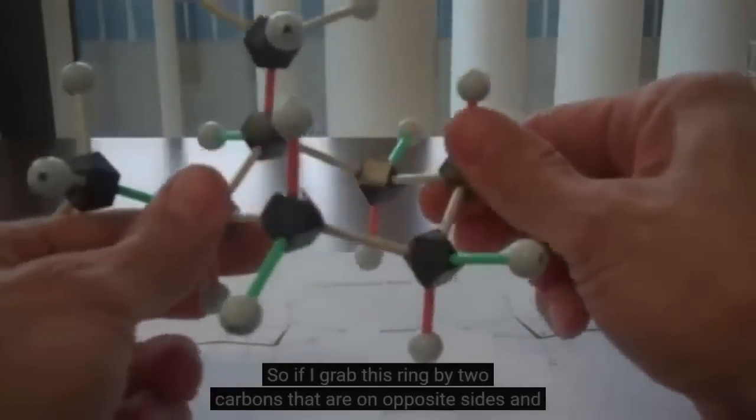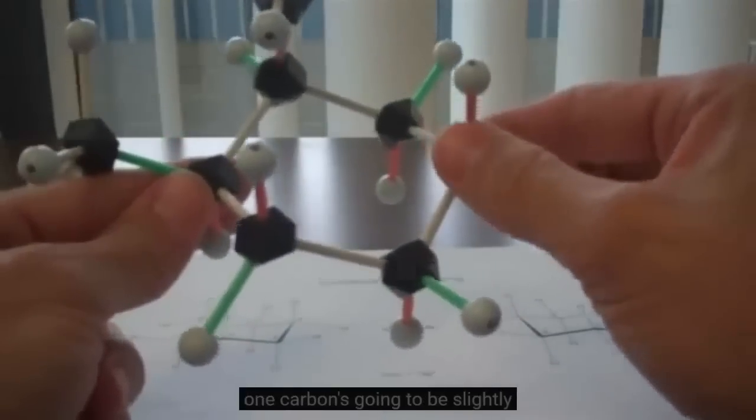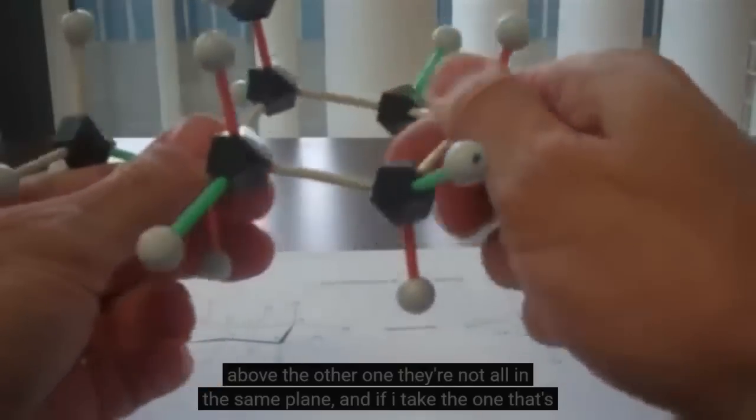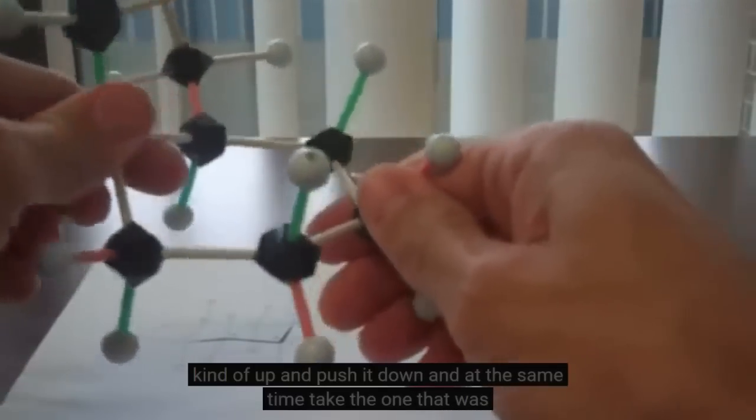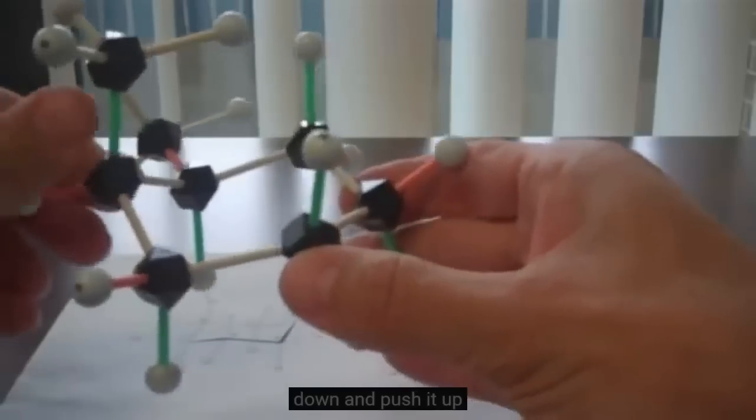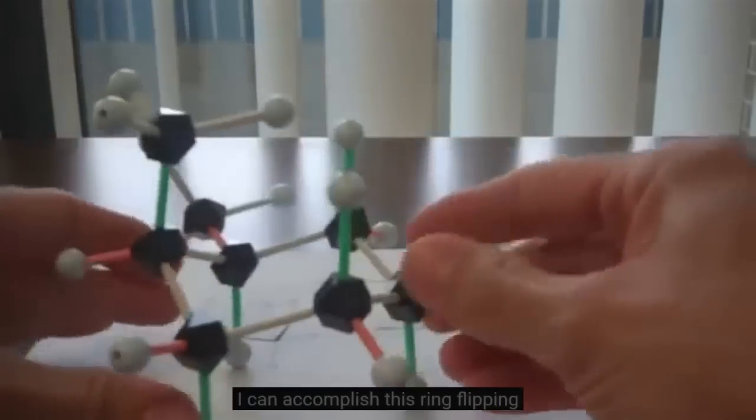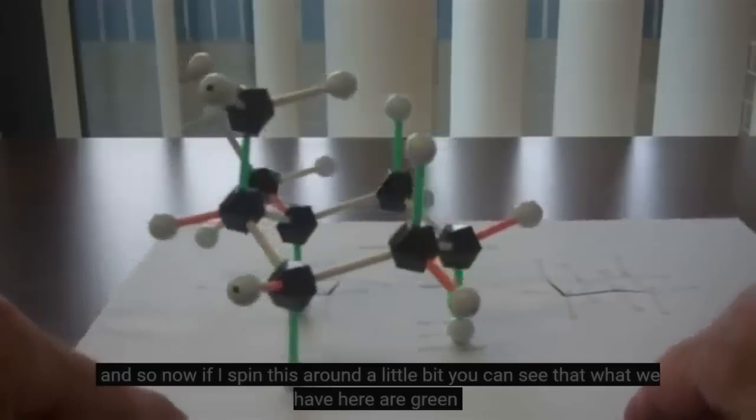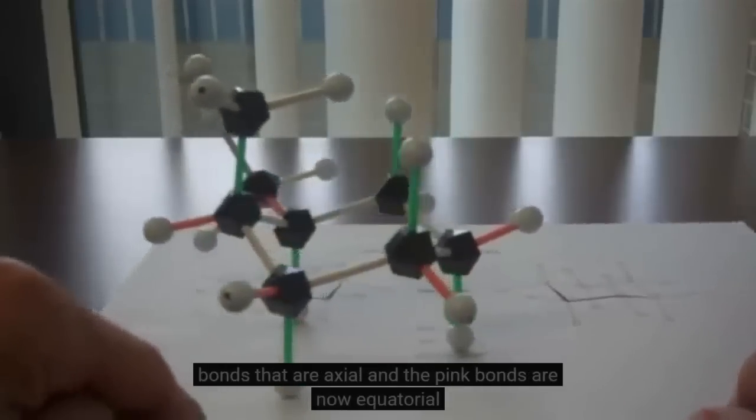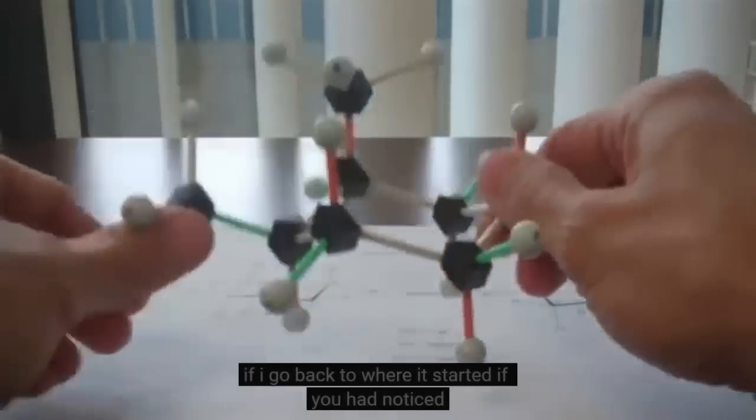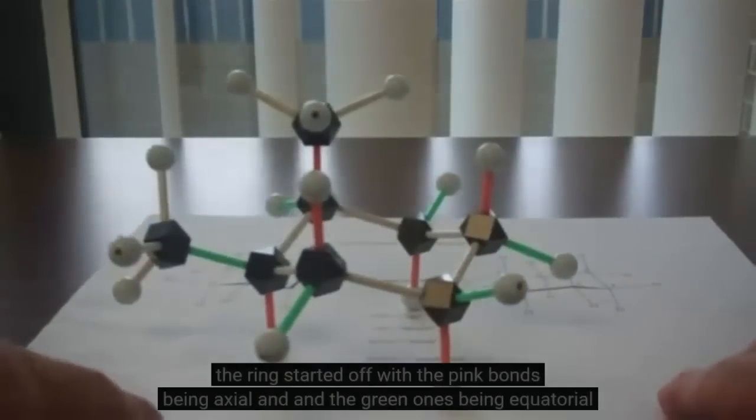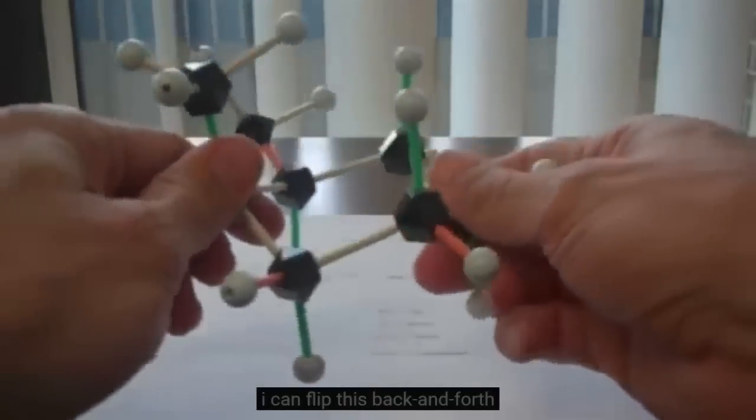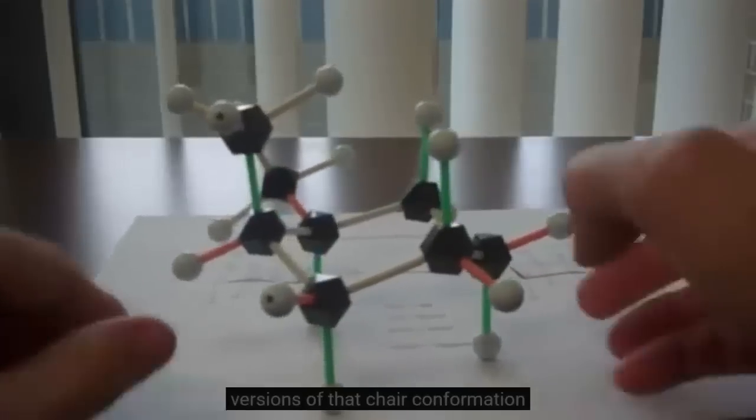So if I grab this ring by two carbons that are on opposite sides, and one carbon is going to be slightly above the other one, they're not all in the same plane, and if I take the one that's kind of up and push it down, and at the same time take the one that was down and push it up, I can accomplish this ring flipping. And I can flip this back and forth and go between those two versions of that chair conformation.